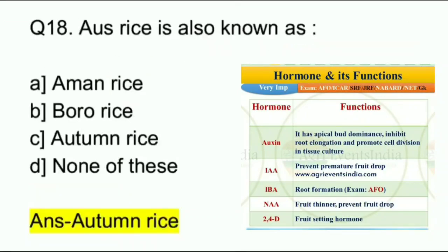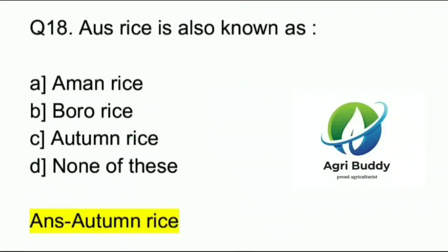Question 18. Aos rice is also known as? A. Amman rice. B. Boro rice. C. Autumn rice. D. None of these. And the answer is Autumn rice.